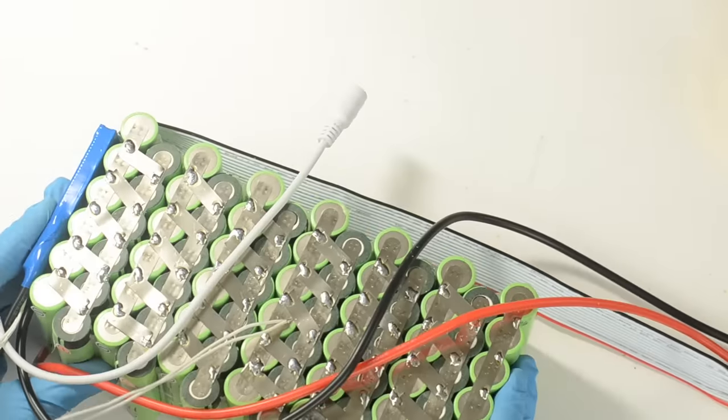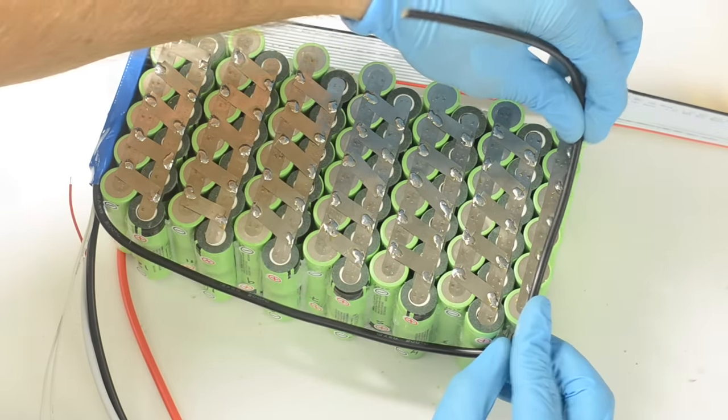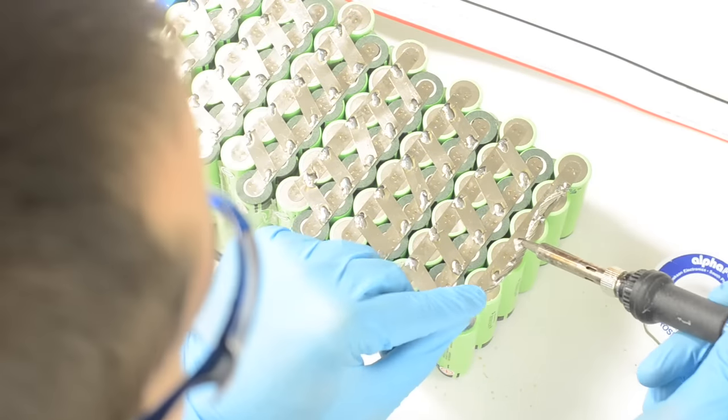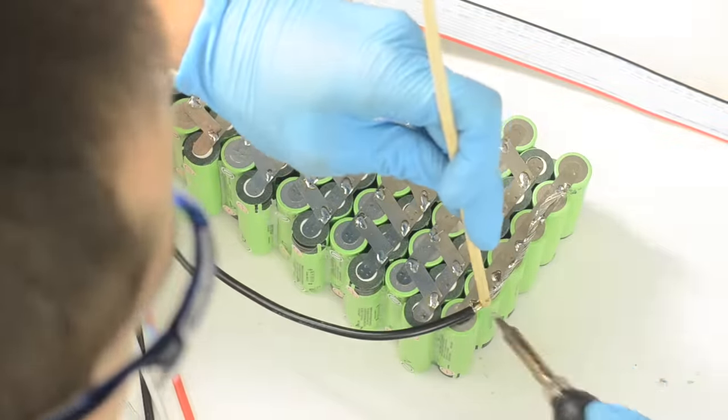And now I'm going to flip the battery back over so I can reach the negative end of the first cell group. And I'll take this black wire from the BMS, measure how far back I need to strip it, and then solder it onto the negative end of the first cell group.